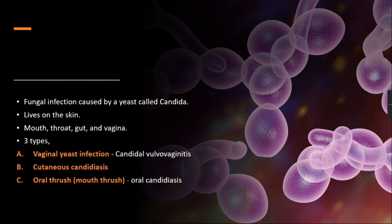Vaginal yeast infection is called Candidal vulvovaginitis, and it occurs in the vagina, which is a female reproductive organ. Cutaneous Candidiasis occurs in the cutaneous layer on the skin. Oral thrush, or mouth thrush, occurs in the mouth region and is called oral Candidiasis. Oral Candidiasis also includes symptoms affecting the throat region.